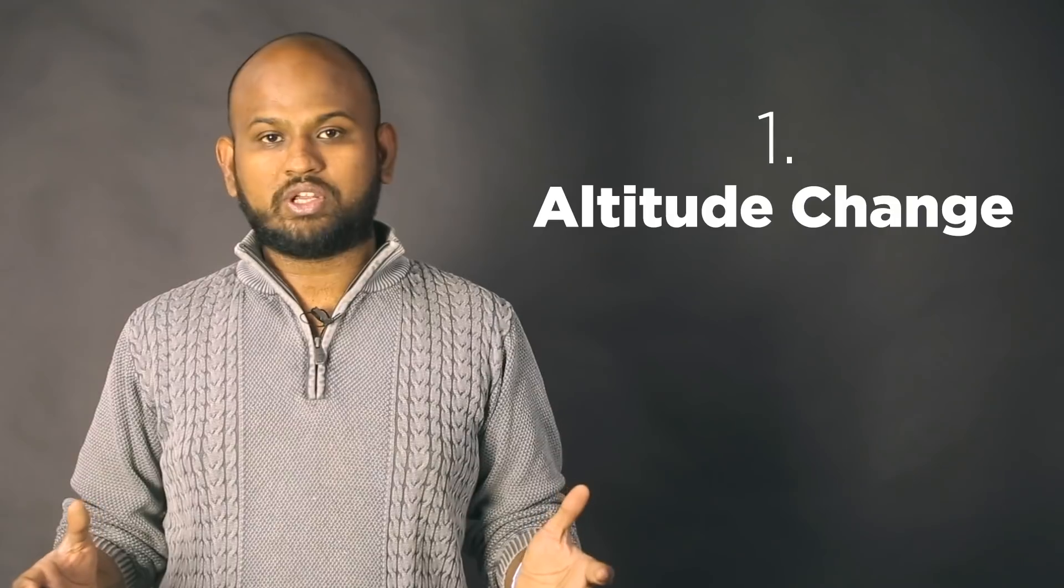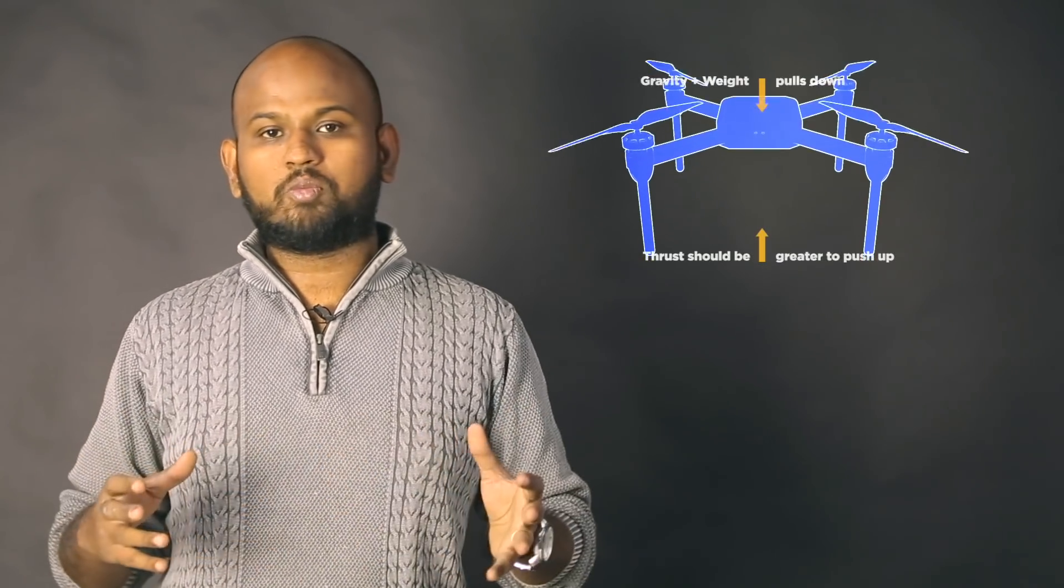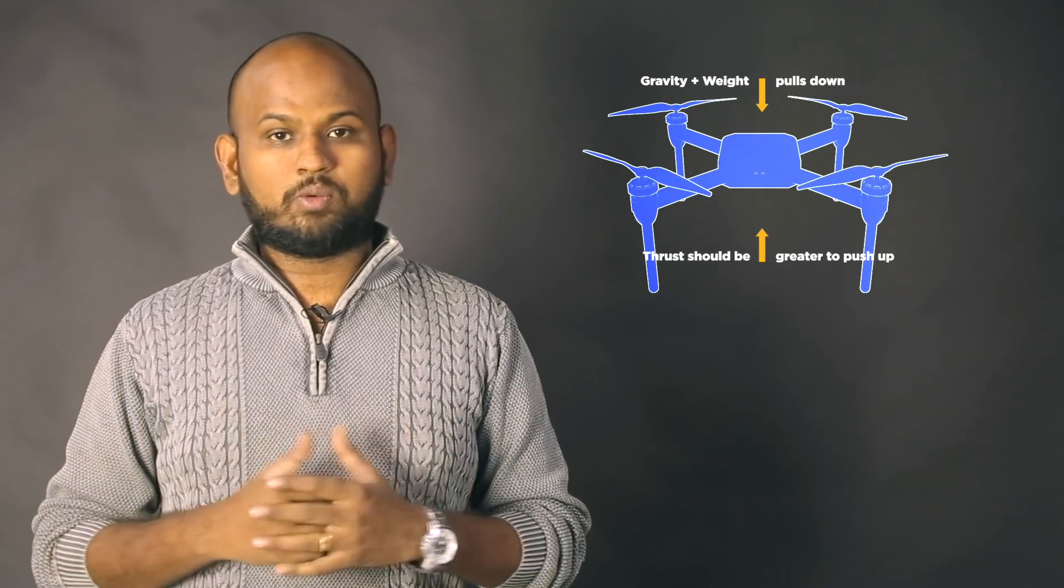Now, let us see the four basic movement of quadcopters. Altitude change. A quadcopter can either hover or adjust its altitude. This is done by applying equal thrust to all four rotors. To hover at a point, all four motors must generate equal amount of thrust which in total should equal the weight of the drone. Thus, an equilibrium will be maintained and the drone will hover.